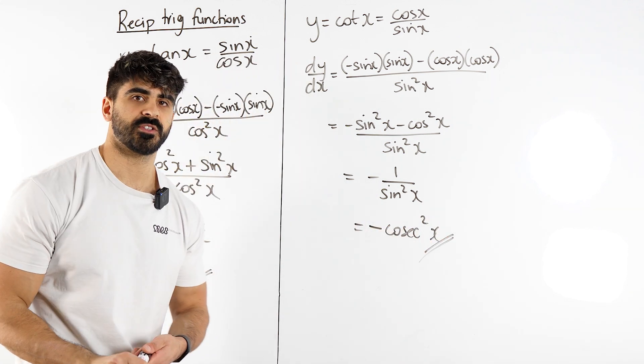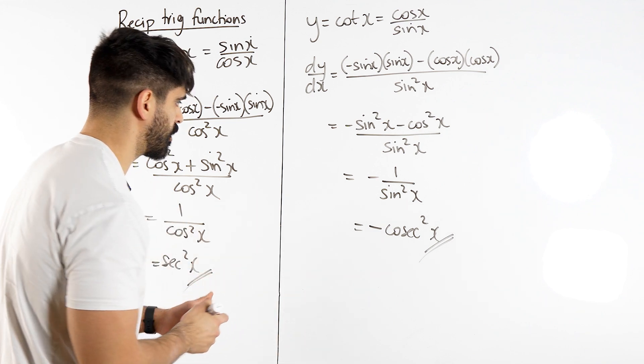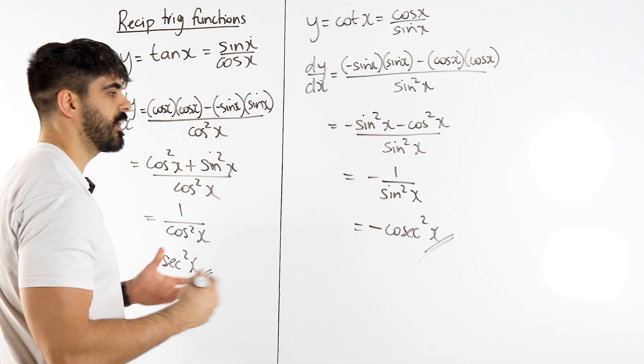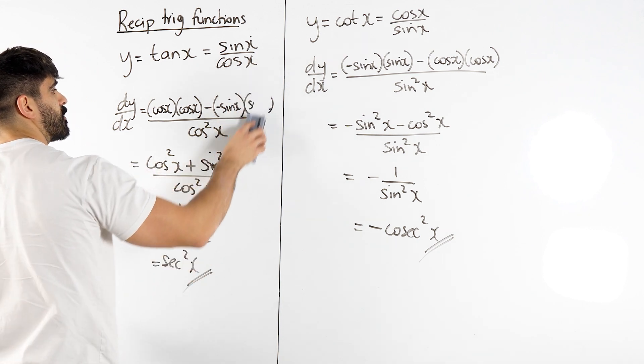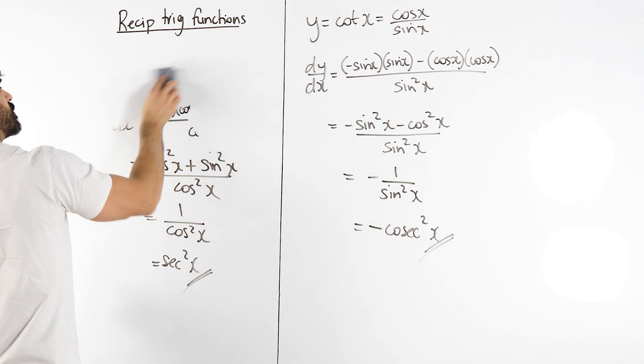All you need to remember guys, is that anything that involves cosec in calculus brings out a negative. So talking about cosec, let's prove what that one differentiates to.